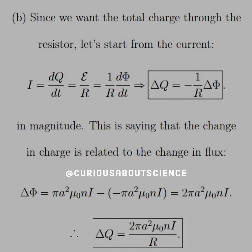We're looking at the change in Q. Since the change in Q is related to the change in flux, we need to find what the change in flux was. Our flux starts at pi A squared mu-naught nI; when the solenoid is pulled far away, the flux goes to zero, so we're just taking that difference. That gives us two copies, 2 pi A squared mu-naught nI. Dividing by R, the change in charge in magnitude equals 2 pi A squared mu-naught nI over R. Be very careful with that change in flux.